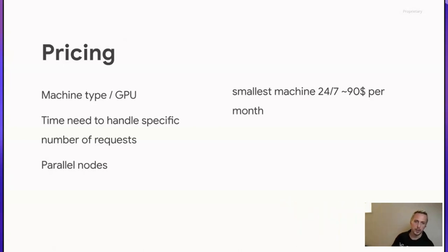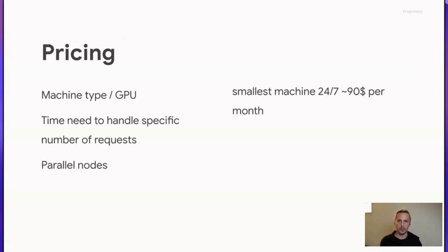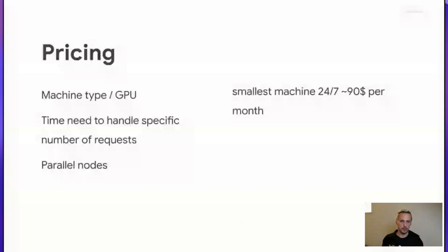Regarding pricing: it depends on machine type and whether you need a GPU. On the smallest machine — N1 Standard 4 — which is usually sufficient for most XGBoost models, you pay about $90 per month to run 24/7. Costs scale with the number of parallel requests you need to serve and how much you need to auto-scale. That covers training and serving — if there are no more questions, let's take a 10-minute break.